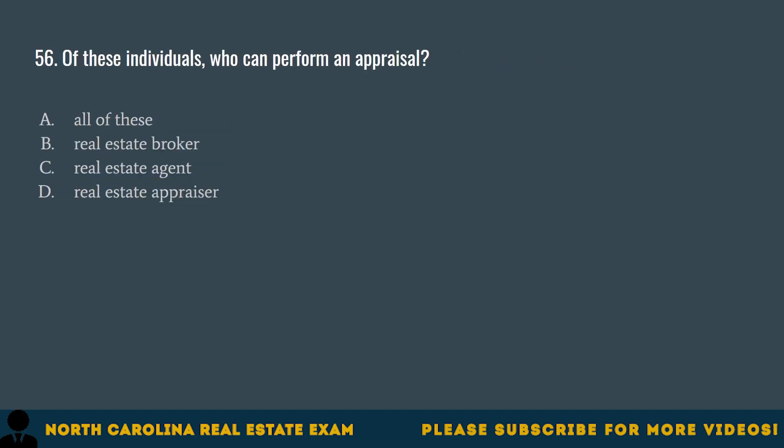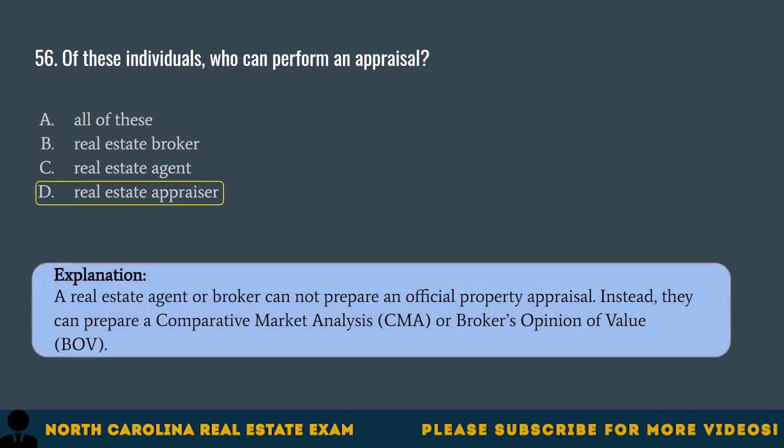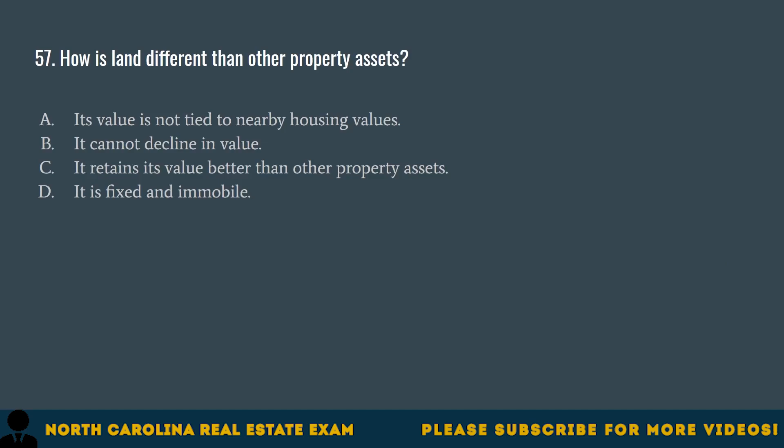Question 56. Of these individuals, who can perform an appraisal? A. All of these. B. Real estate broker. C. Real estate agent. D. Real estate appraiser. The correct answer is D. Real estate appraiser. A real estate agent or broker cannot prepare an official property appraisal. Instead, they can prepare a comparative market analysis (CMA) or broker's opinion of value (BOV).